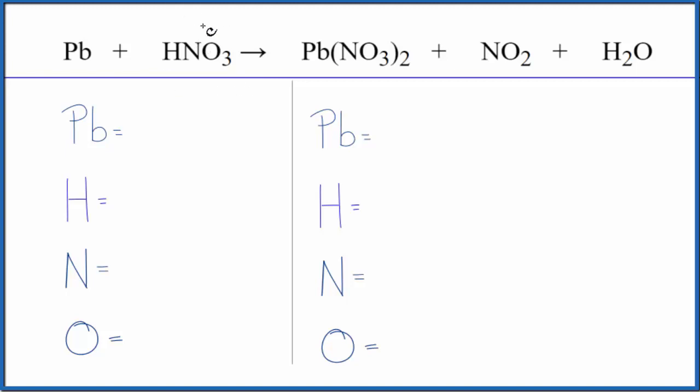So we have our dilute nitric acid reacting with the lead. If this was concentrated, you'd get different products here. Let's count the atoms up and balance the equation.